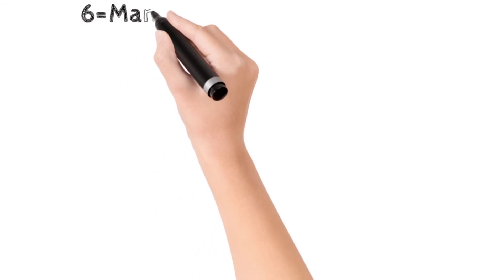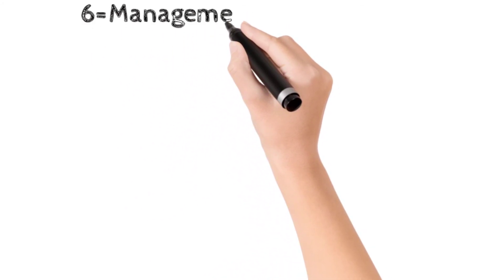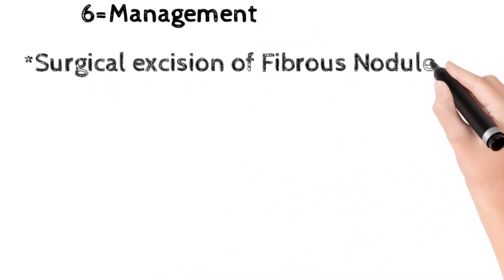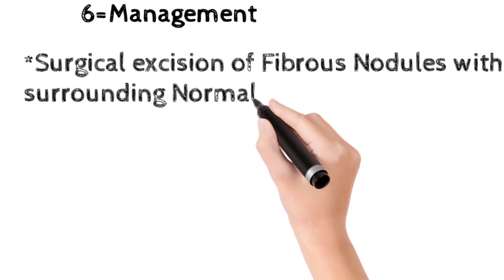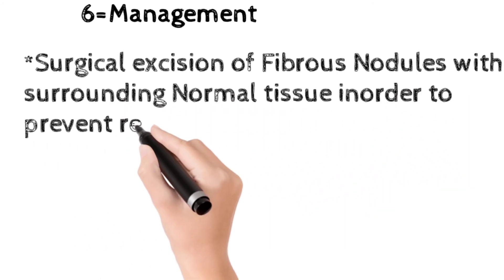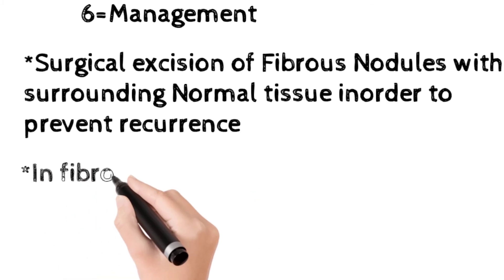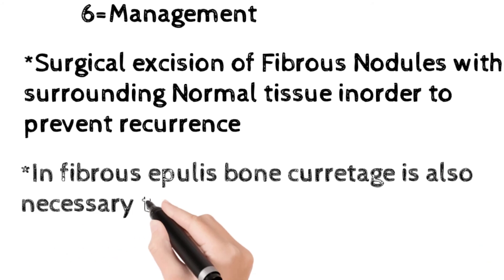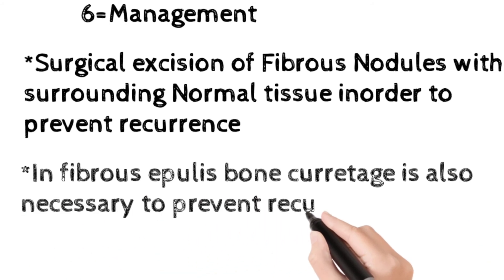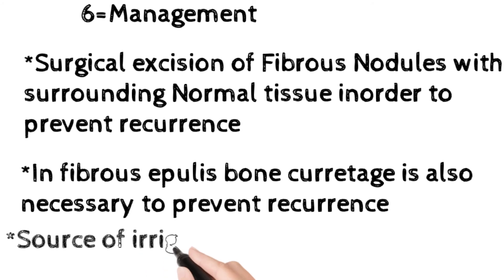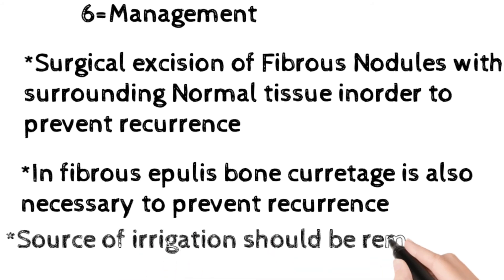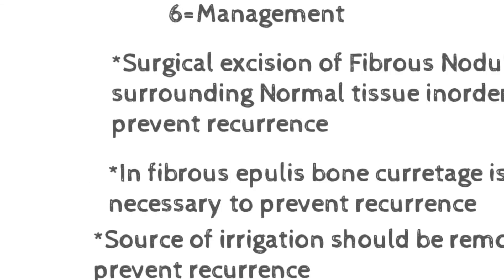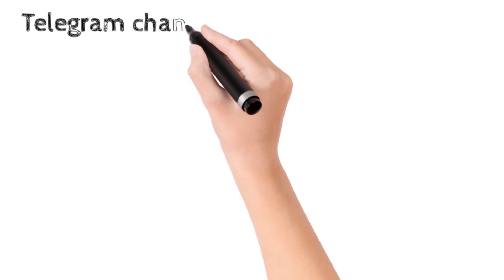In the management of fibrous nodules: first, surgical excision of the fibrous nodule with surrounding normal tissue is done in order to prevent recurrence. Second, when fibroepulis contains bone, curettage of the bone is also necessary to prevent recurrence. Third, the source of irritation should be removed in order to prevent recurrence. Today our topic is complete.